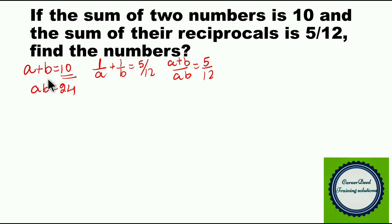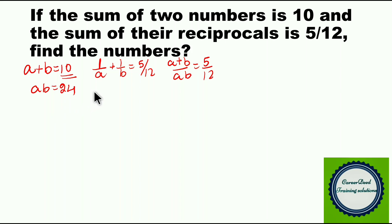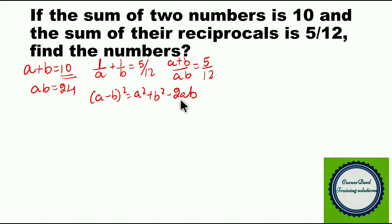Now you have two equations. If you have A plus B, you need A minus B to find A and B separately. You know A plus B equals 10. To find A minus B squared, use the identity: A minus B squared equals A squared plus B squared minus 2AB. You already have A times B equals 24, but you still need A squared plus B squared separately.